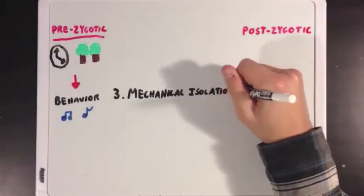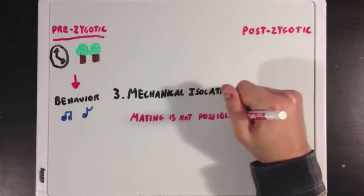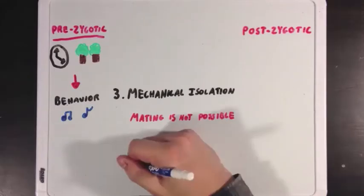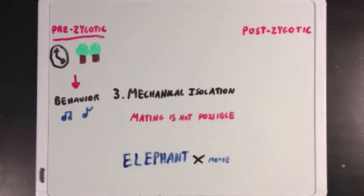And now we have mechanical isolation, which deals with the physical inability of two organisms to mate, even if they wanted to. A great example of this is a huge animal, like an elephant, being unable to mate with a tiny mouse.